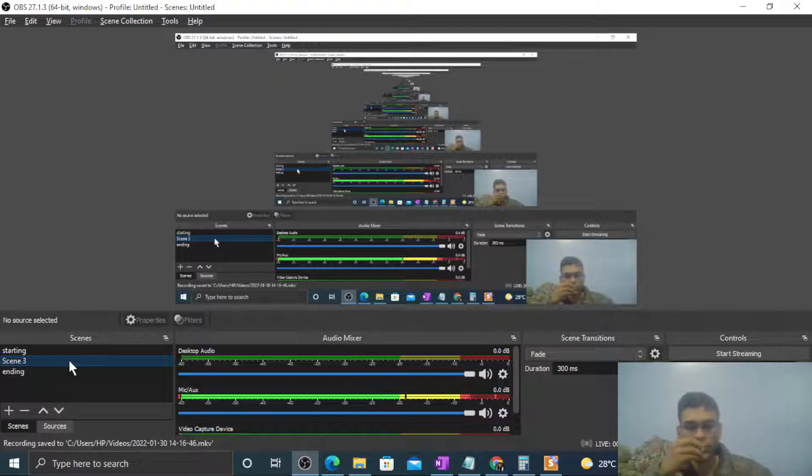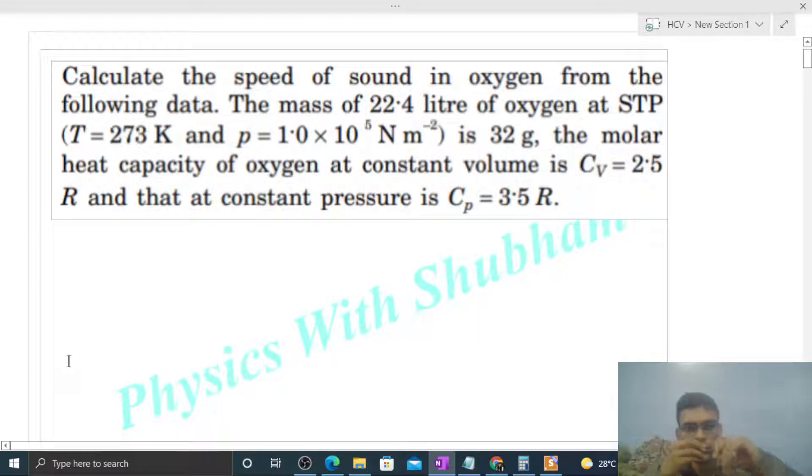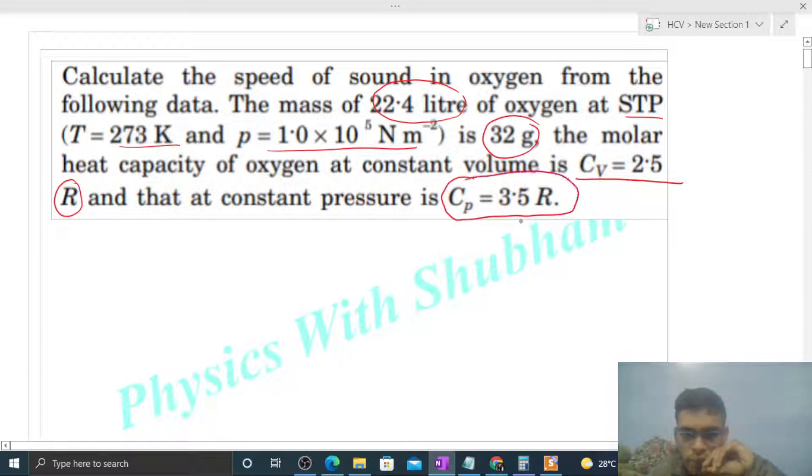Okay, hi everyone. Today let's discuss one interesting problem. It says calculate the speed of sound in oxygen from the following data. The mass of 22.4 liter of oxygen at STP, temperature is given and pressure is also given, is 32 gram. The molar heat capacity of oxygen at constant volume is given, Cv is 2.5 R, and that at constant pressure is Cp is also given, 3.5 R.